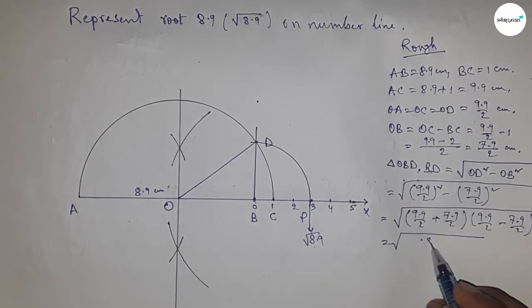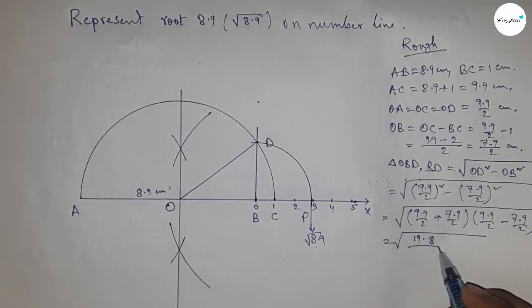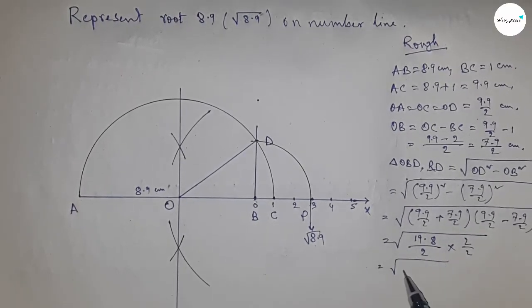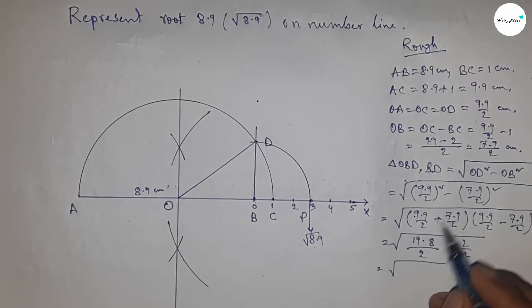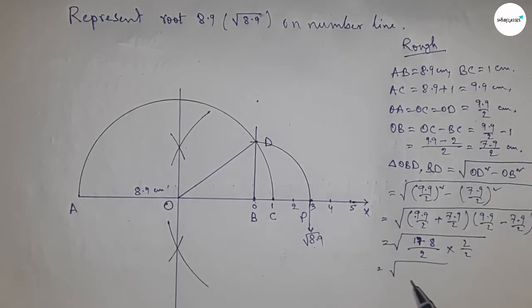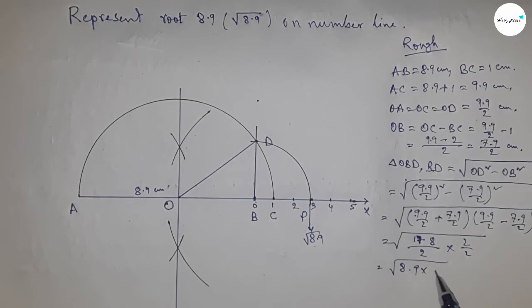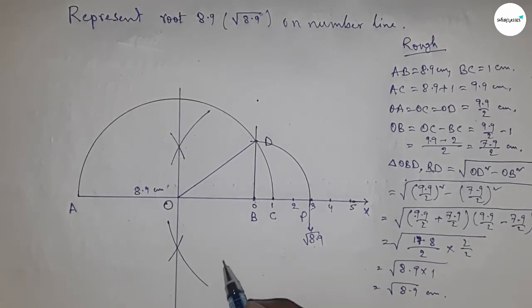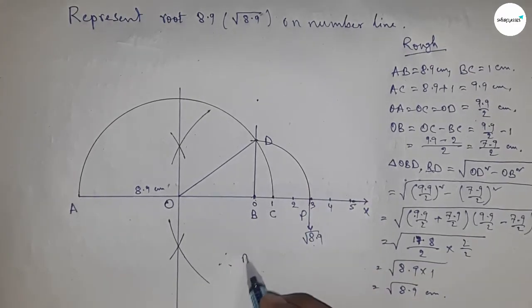So from this, we get 8 and 19.8 by 2 into 2 by 2, which is 17.8. So this is 8.9 into 1, which gives us root 8.9 centimeters. Therefore, distance BD and BP are equal to root 8.9 centimeters.